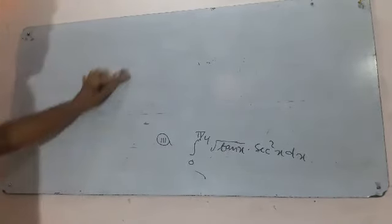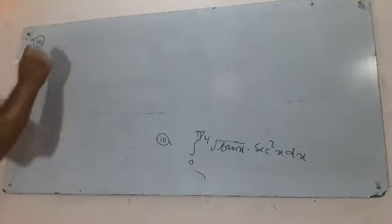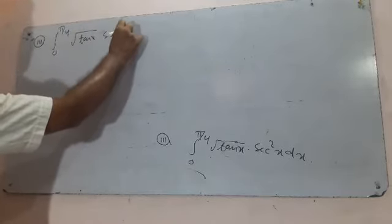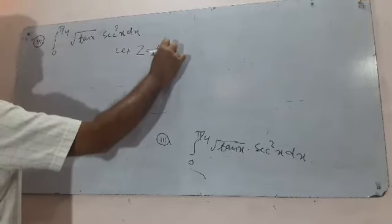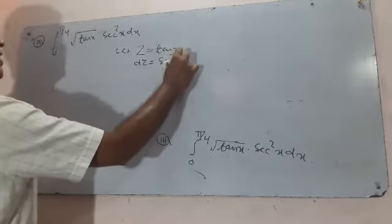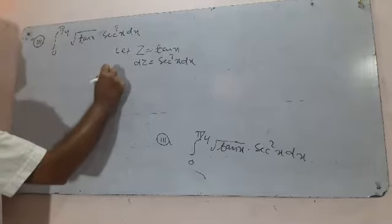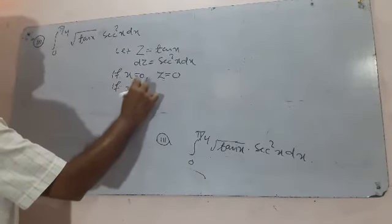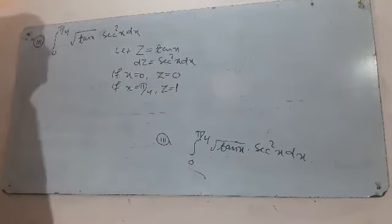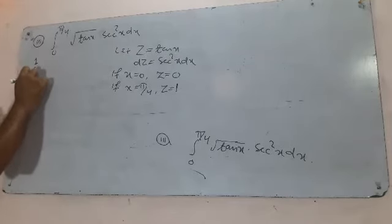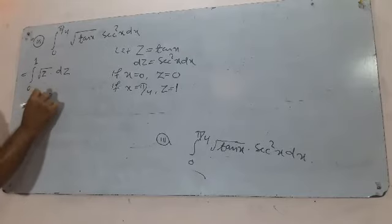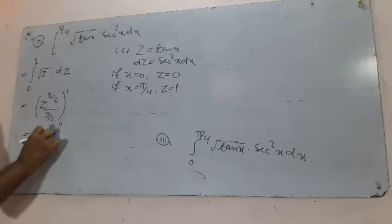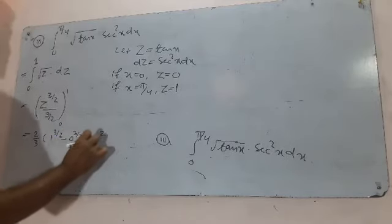Part (c) is the integral from 0 to π/4 of √tan x × sec²x dx. Put z = tan x, so dz/dx = sec²x, meaning dz = sec²x dx. When x = 0, z = 0. When x = π/4, z = tan(π/4) = 1. The integral becomes the integral from 0 to 1 of √z dz. The integral of z^(1/2) is z^(3/2) divided by 3/2, evaluated from 0 to 1, giving (2/3)(1^(3/2) - 0) = 2/3.